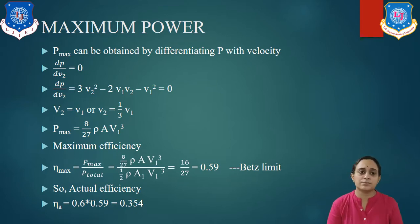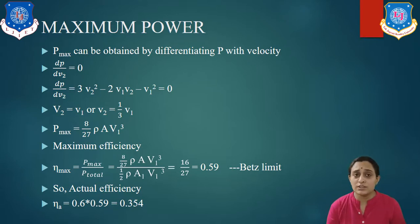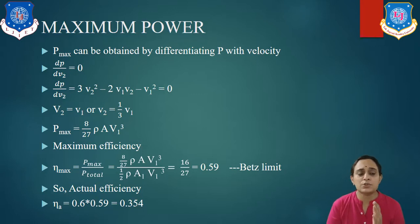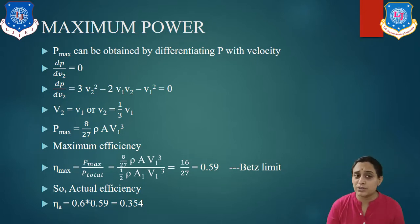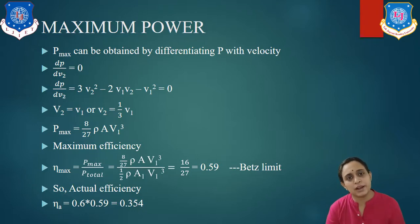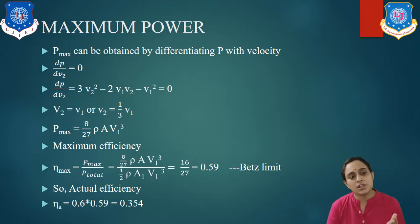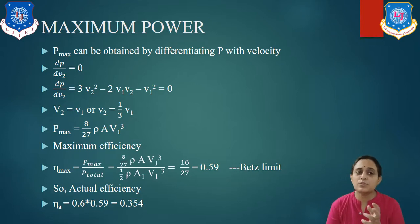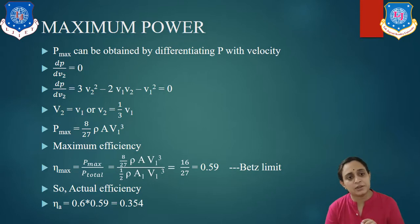Solving this equation gives two values: V2 = V1 and V2 = V1/3. Since inlet and outlet velocities must differ, the physically meaningful solution is V2 = V1/3. Substituting V2 = V1/3 into the power equation, we get P_max = (8/27)ρAV1³.